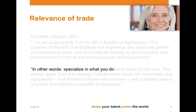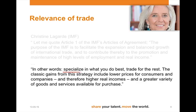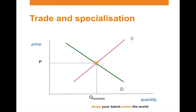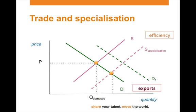She also mentions specialization, and that it will lead to lower prices, and that consumers will have a variety of goods and services available. If a country is able to specialize in a product, it will find efficiency advantages — it can produce at a lower cost, and this lower cost will lead to more sales. It can even export more, which will lead to a further increase in demand. Clearly the market forces of supply and demand will make sure that equilibrium is established.